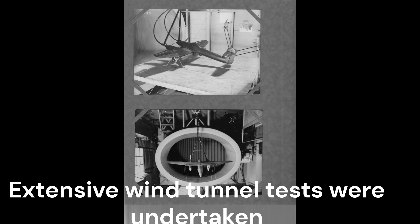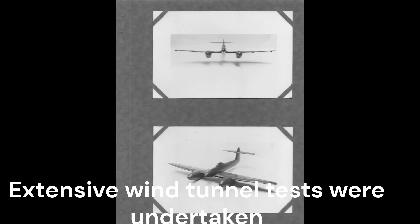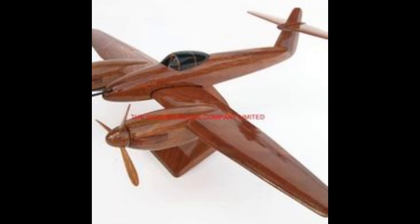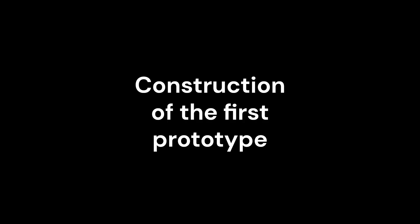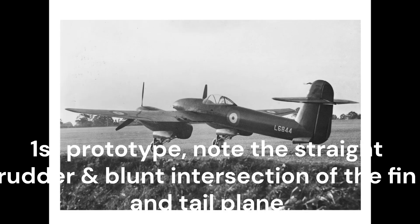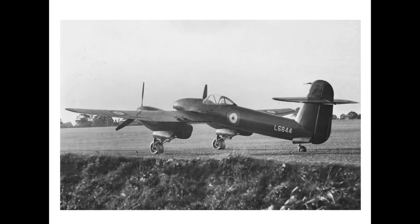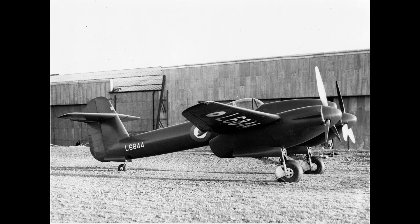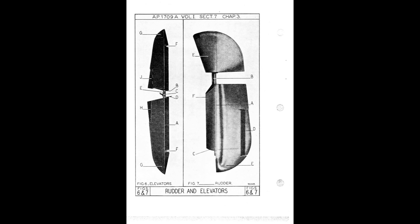The T-tail of the prototype was not an unqualified success, requiring a number of modifications. The main problem was poor longitudinal control, with the rudder proving ineffective at low angles of incidence and low speeds. It was especially poor in the take-off and landing flight envelope. The remedy was to produce a horn balance style rudder with asymmetric concave surfaces.